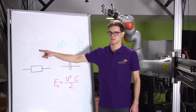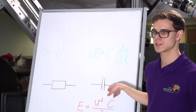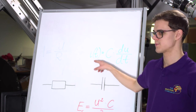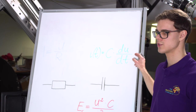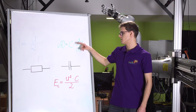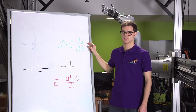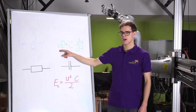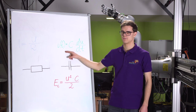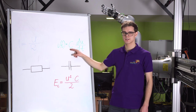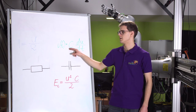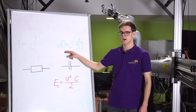With capacitors, the situation is slightly different from resistors. The current value is proportional to the rate of voltage change over time — this component is the voltage derivative. It tells us that the faster the voltage changes, the higher current will flow in the circuit. C is the capacitance of the capacitor, and the higher the capacitance, the higher the current will flow.